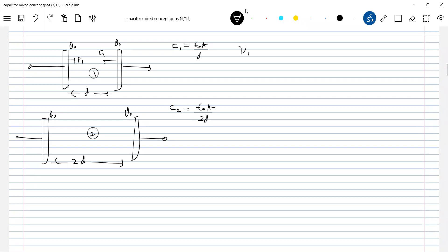So let's calculate initial energy. U1 equal to Q0 squared by 2C1. This will be ε0, final energy. Q0 squared by 2C2. So Q0 squared by 2ε0, A by 2D.